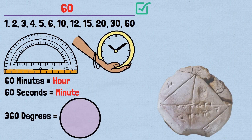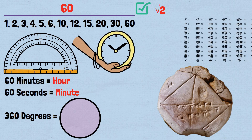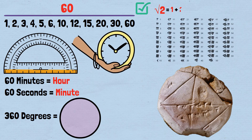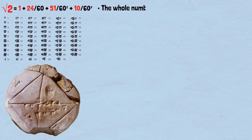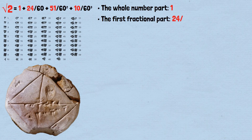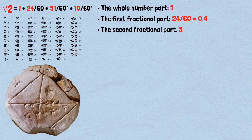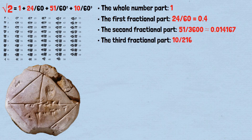On the tablet, the Babylonians represented their calculation of the square root of 2 as a mixed number in base 60: 1 plus 24/60 plus 51/60² plus 10/60³. In modern terms: the whole number part is 1; the first fractional part, 24/60, equals 0.4; the second fractional part, 51/3600, approximately equals 0.014167; the third fractional part, 10/216,000, approximately equals 0.0000463.